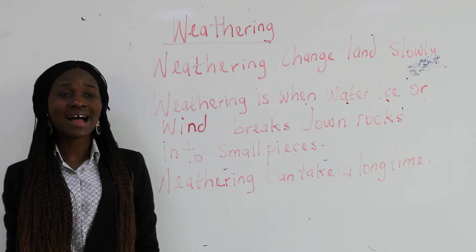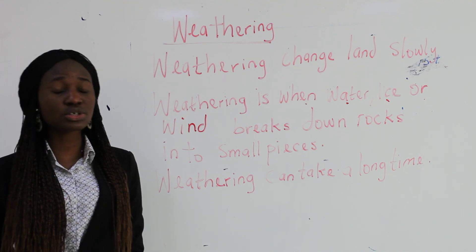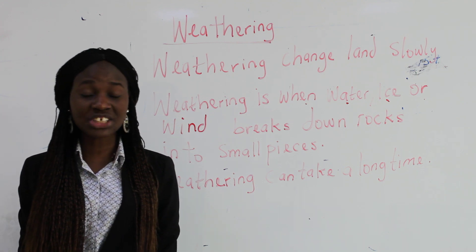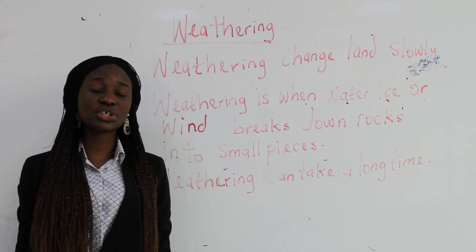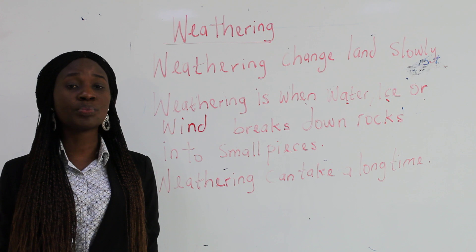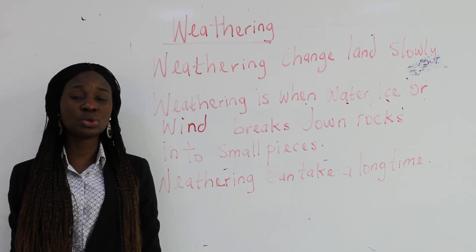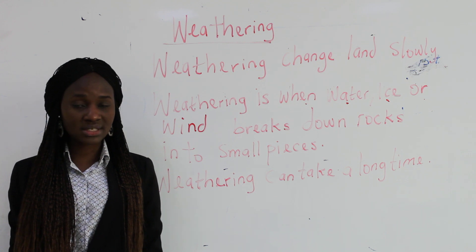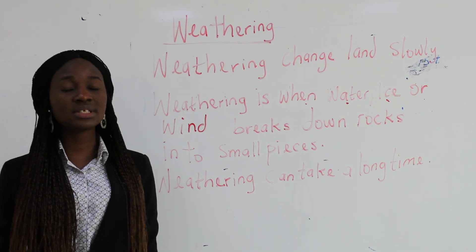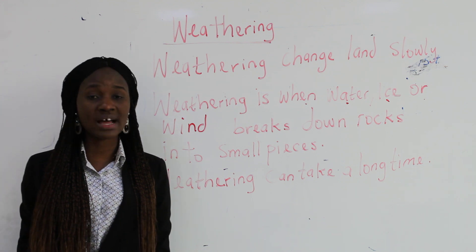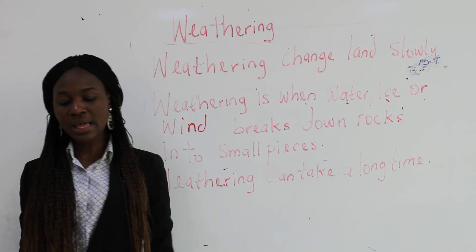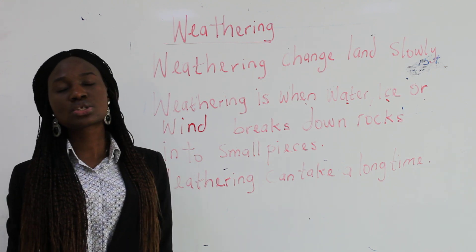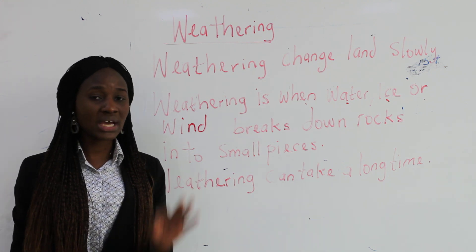I talked about how the Earth can change fast or slowly. The things that change the Earth — I told you about earthquakes and volcanoes, and I told you they change the Earth fast. Earthquakes happen fast, volcanoes happen fast.